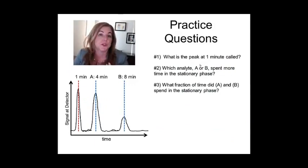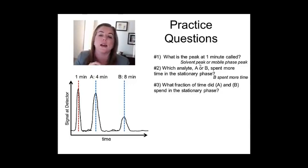Now, let's go over some practice questions to see how you're doing with these concepts. I want you to take a look at these questions, maybe stop the video and try to answer them. Okay, so what's the peak at one minute called? I called it a couple of different things. It's definitely T sub M peak. We'll call it the solvent peak or the mobile phase peak. So, which analyte A or B spent more time in the stationary phase? Well, B came out later, so it was definitely spending more time there. So, definitely B. Now, a tougher question. What fraction of time did A and B spend in the stationary phase? Can you get it from this data? And you can.